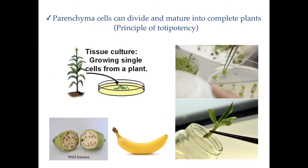A very interesting characteristic of parenchyma cells is that they retain the ability to divide and produce a completely mature plant from a single cell. This is the basis of plant tissue culture — a technique I worked with extensively in my undergraduate and master's research. In theory, we can isolate any cell from a plant body and, starting from that one single cell, produce a whole new plant.